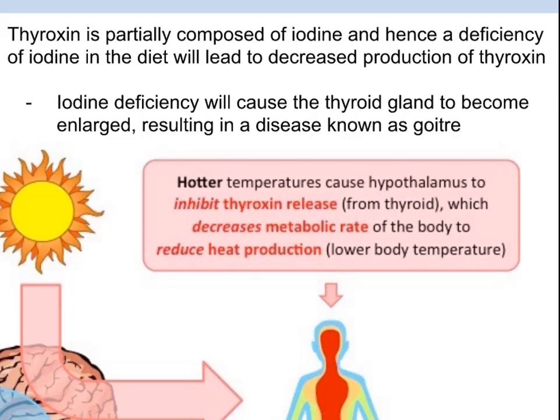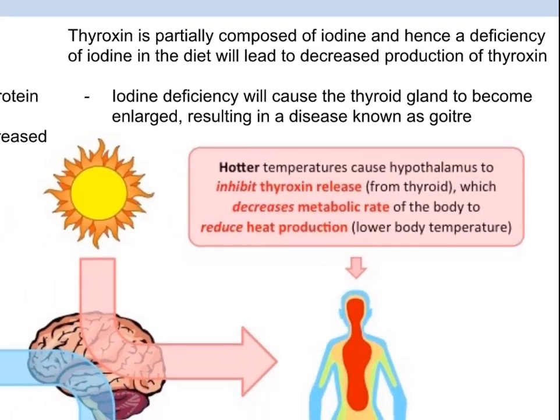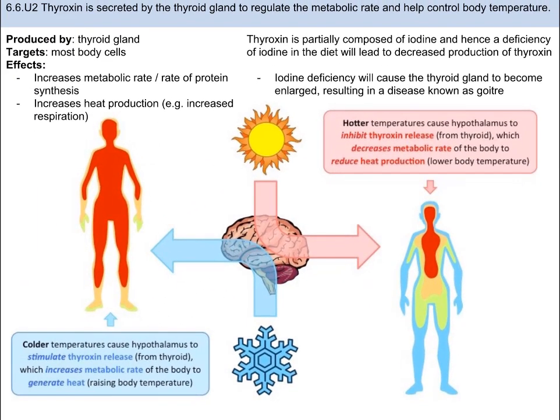Fun fact: thyroxin has iodine in it, and if you don't get enough iodine in your diet, this is also going to lead to decreased production of thyroxin and can cause the thyroid gland to become enlarged, which results in a disease known as a goiter.